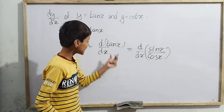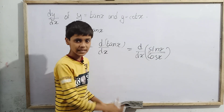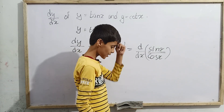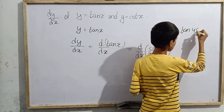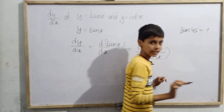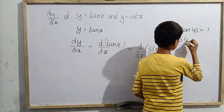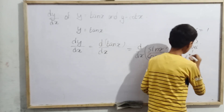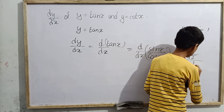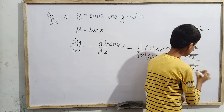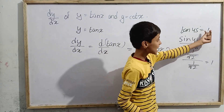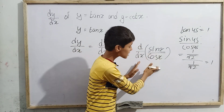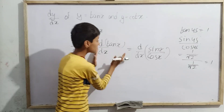Since we know that tan x equals sin x by cos x, both are the same thing. For example, tan 45° equals 1, and sin 45° by cos 45° equals (1/√2) divided by (1/√2), which also equals 1. So tan 45° equals sin 45° by cos 45°. Similarly, tan x equals sin x by cos x.